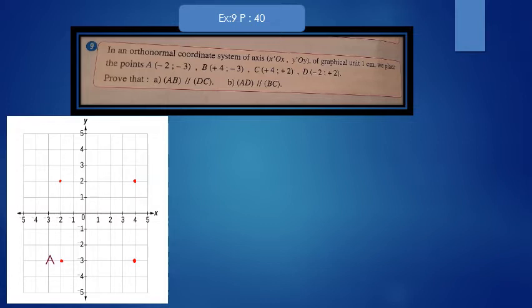B(+4,-3). We know how to plot these points. C(+4,+2). The abscissa is plus 4 and the ordinate plus 2. I have to go up two steps. This is point C.